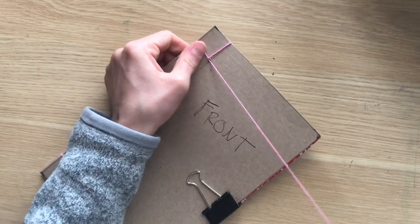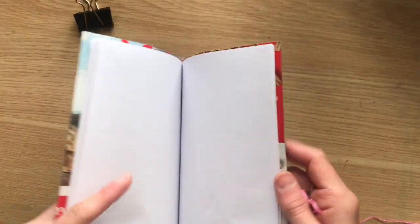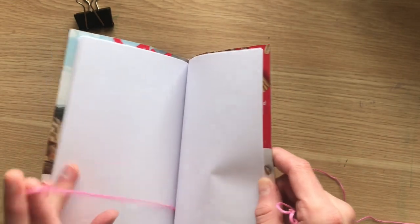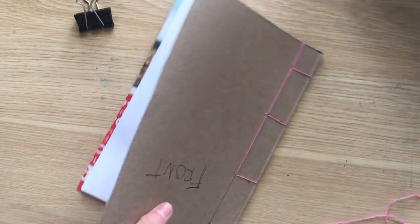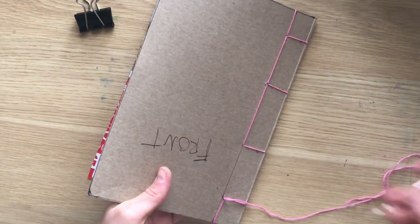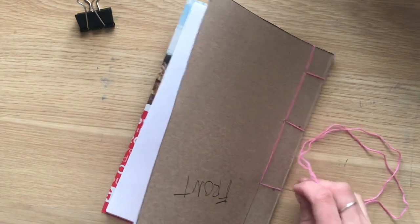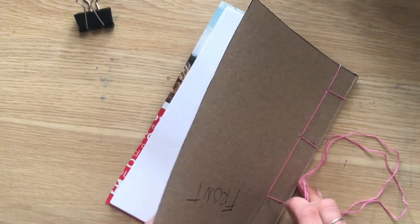So you're almost done. This is the trickiest part of the entire binding process. You're going to go from hole one to hole two, but instead of going all the way through hole two, you're just going to go to the middle of your book where that string from the very first time we started binding our book is.